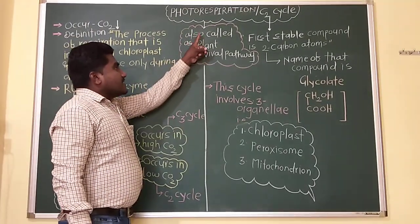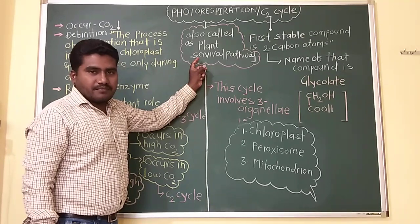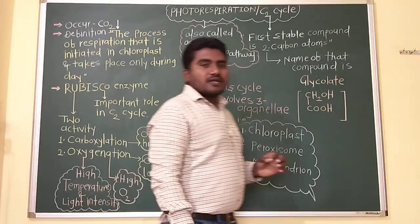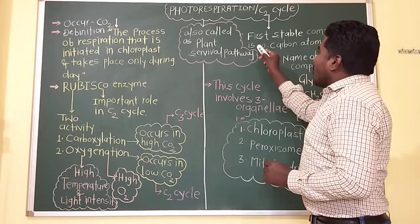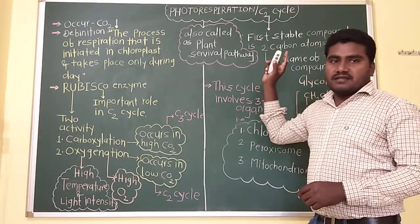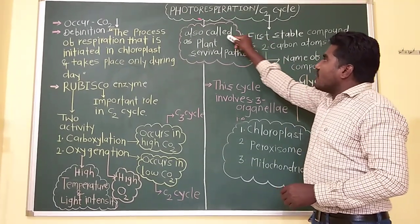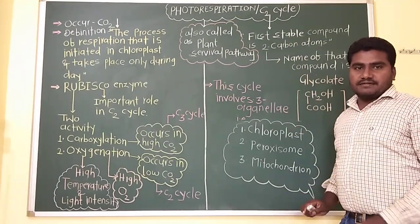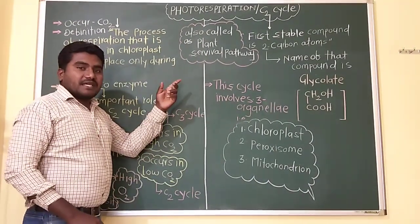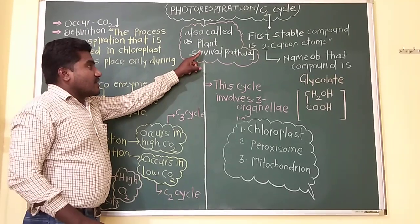This pathway is also called the plant survival pathway. Why do we call it a plant survival pathway? Because in a C3 plant, at high carbon dioxide concentration, the C3 pathway will operate. But at low carbon dioxide concentration, the C3 pathway cannot be operated. In a C3 plant under low CO2, there is occurrence of photorespiration, or the C2 cycle.